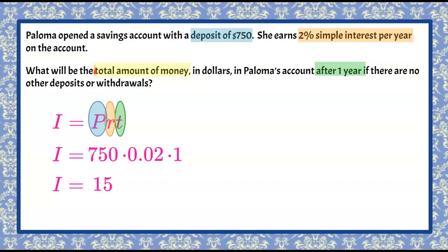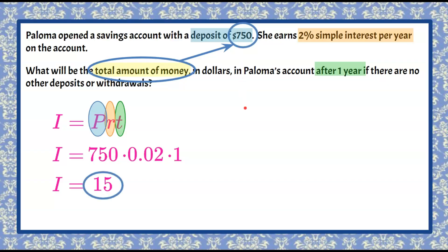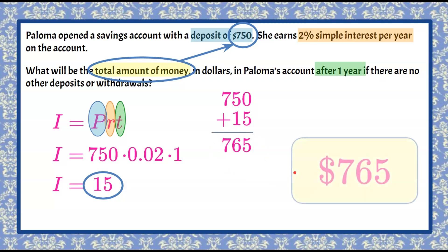We were asked for the total amount of money in her account at the end of the year, so she doesn't just have $15 total. She had put $750 into her account, so the total is $750 plus the $15 interest. That means after one year, Paloma now has $765 — that is your answer.